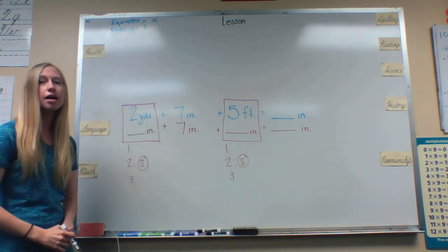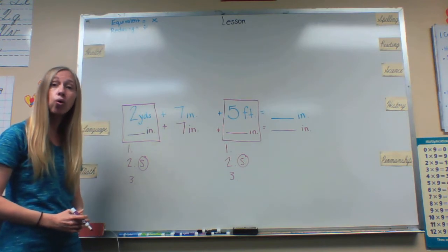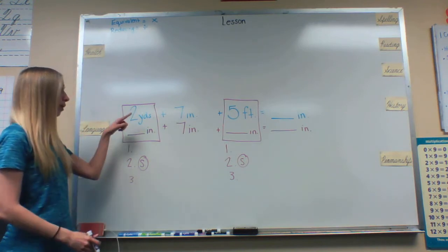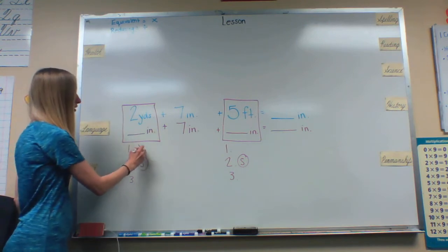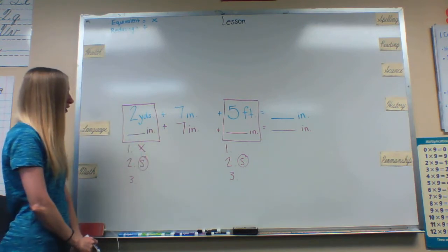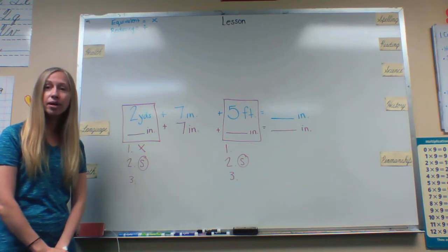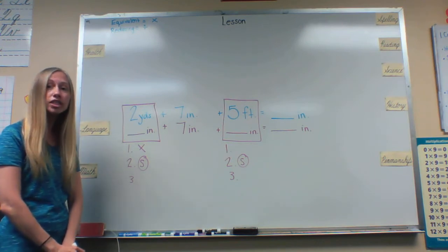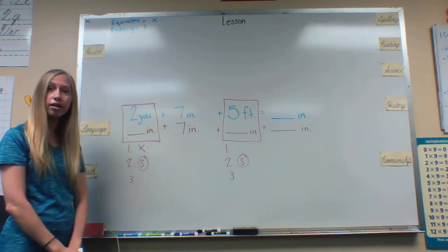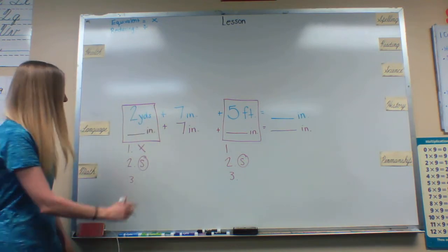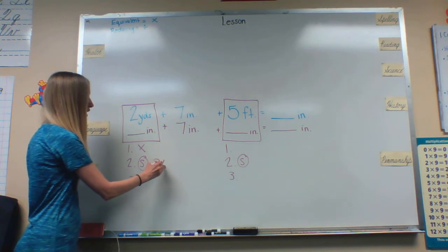The first step is to see if we need to multiply or divide. So when we are going from bigger to smaller we multiply. Then we need to find out how many of our smaller goes into our larger. Well how many inches fit into one yard? The answer would be 36. So that is our special number.